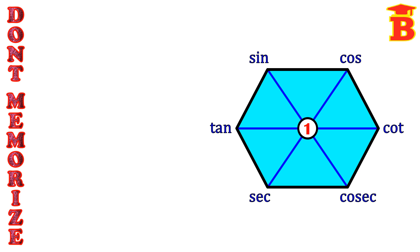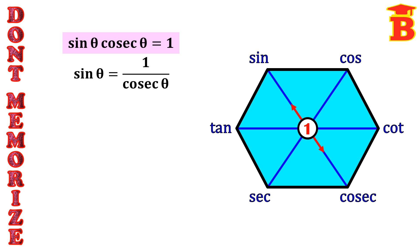Now taking the diagonal lines, we get the reciprocal formulas. Taking the first diagonal, we have sin and cosecant. The product of these two equals 1, so sin θ × cosec θ = 1. From this, sin θ = 1/cosec θ and cosec θ = 1/sin θ — these two are reciprocals of each other. The main formula here is sin θ × cosec θ = 1.